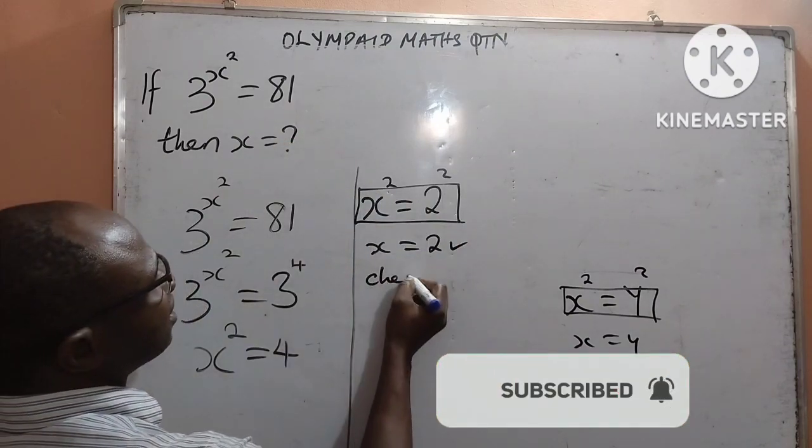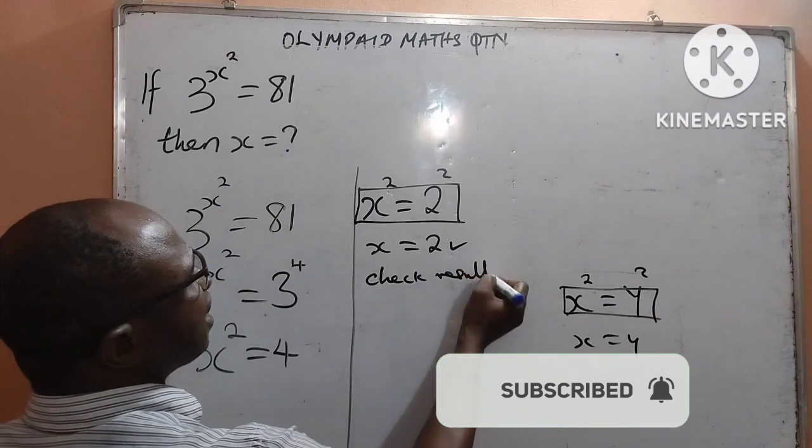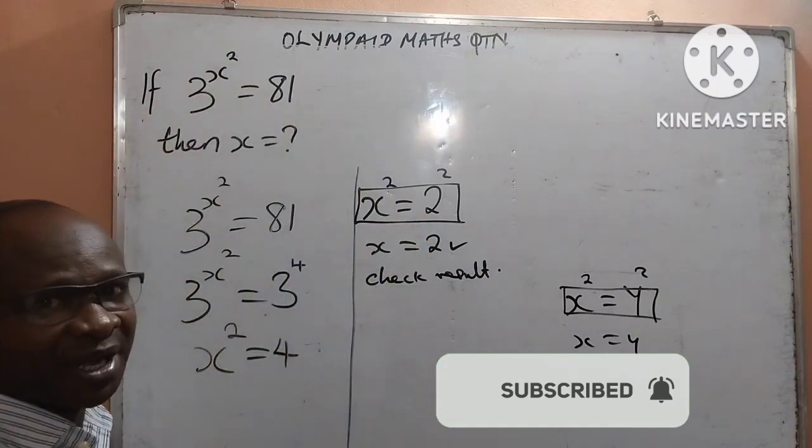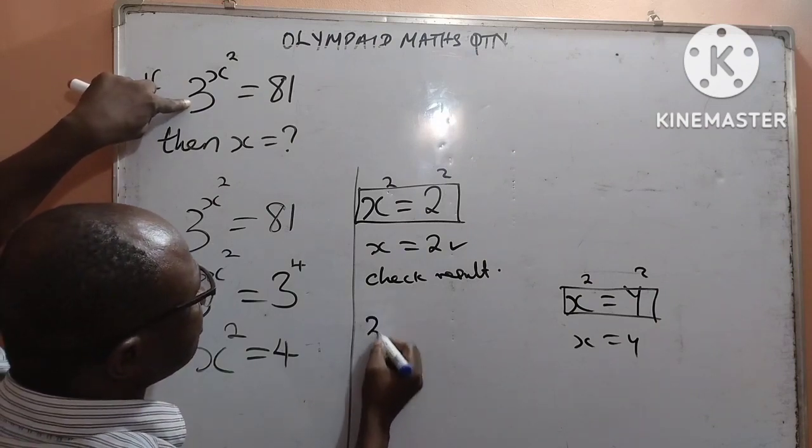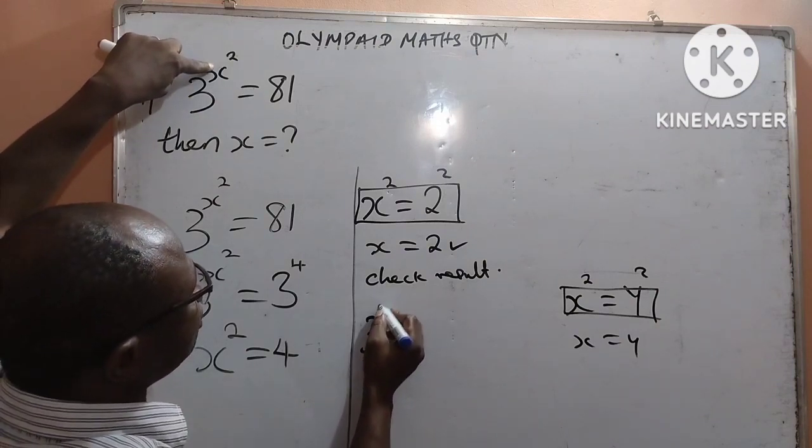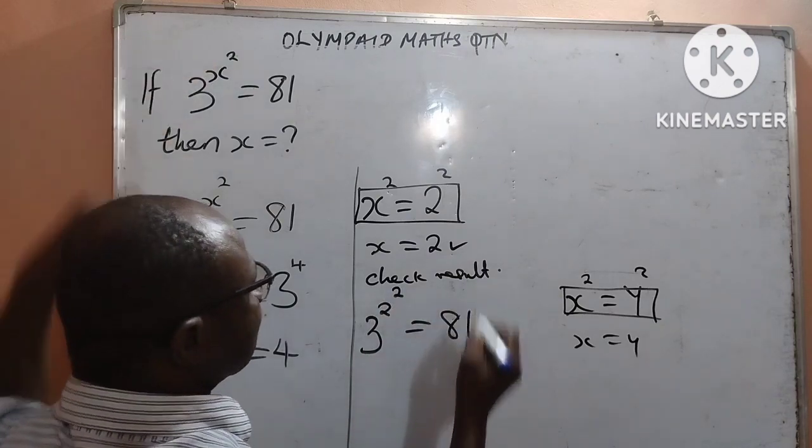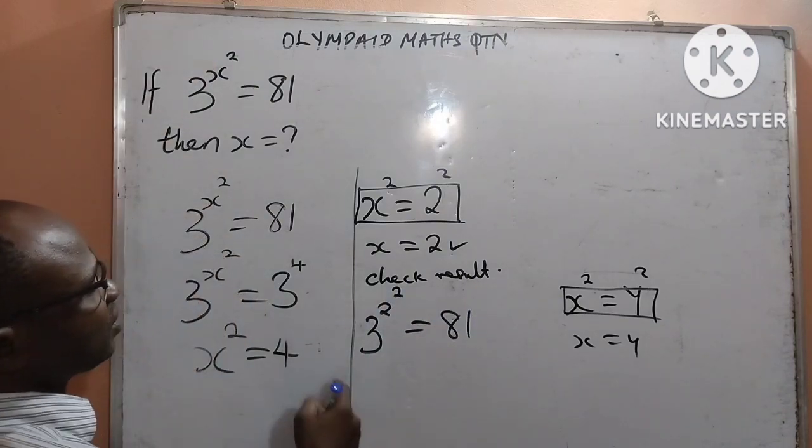Let's check the result. Our x is 2. Anywhere I see x by the left, I put my 2. That becomes 3 to the power of 2 to the power of 2 is equal to 81 by the right hand side.